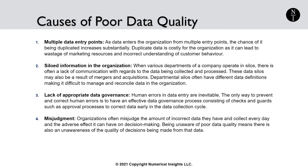The third cause is a lack of appropriate data governance. Human errors in data entry are inevitable. The only way to prevent and correct human errors is to have an effective data governance process consisting of checks and guards, such as approval processes to correct data early in the data collection cycle. The fourth cause is misjudgment. Organizations often misjudge the amount of incorrect data they have and collect every day and the adverse effect it can have on decision making. Being unaware of poor quality data means there is also an unawareness of the quality of decisions being made from that data.